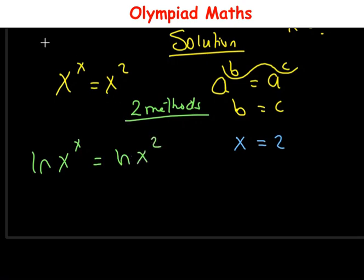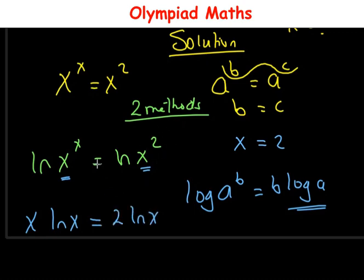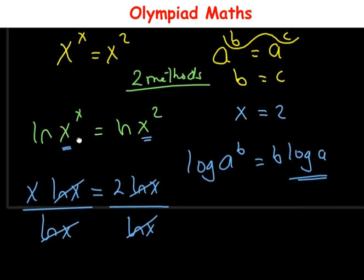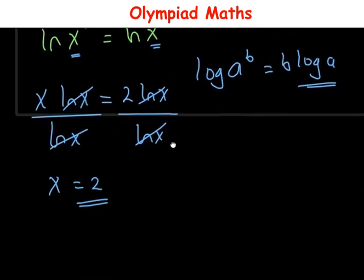Applying the logarithm rule that ln of a raised to power b equals b times ln of a: the power x comes down to give x times ln(x), and the power 2 gives 2 times ln(x). Dividing both sides by ln(x), we get x is equal to 2, which matches our initial value.